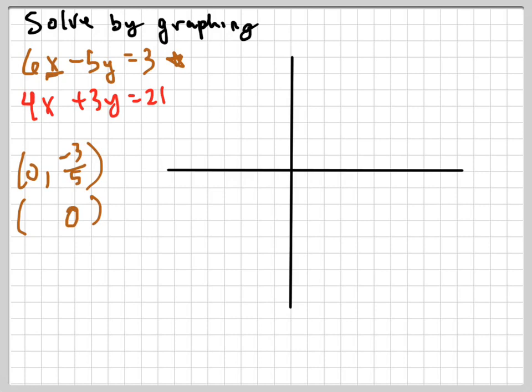To find the x-intercept, I plug zero in for y right there, and in my head I solve that equation. Six x equals three. What does x equal? Three over six, which is one half. How many points do you need in order to graph a line? Just two, and I have my two points.